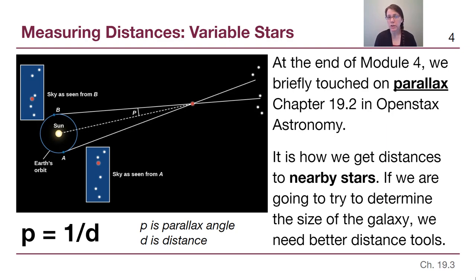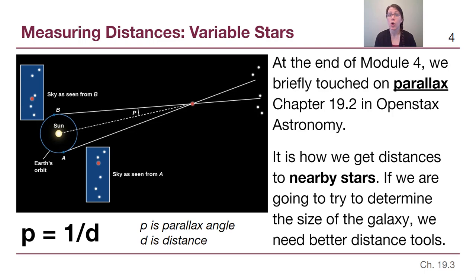Parallax is very useful for getting the distances to nearby stars, but because it needs more distant objects that you're comparing motion to, it will not work for stars on the other side of our galaxy, or anything outside of our galaxy.